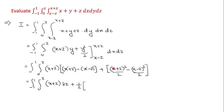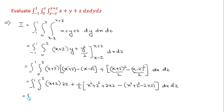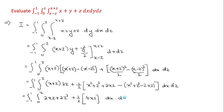Expanding (x+z)² minus (x-z)²: x² + z² + 2xz minus (x² + z² minus 2xz) = 4xz. So the integral becomes ∫(minus 1 to plus 1) ∫(0 to z) [2xz + 2z² + (1/2)(4xz)] dx dz.